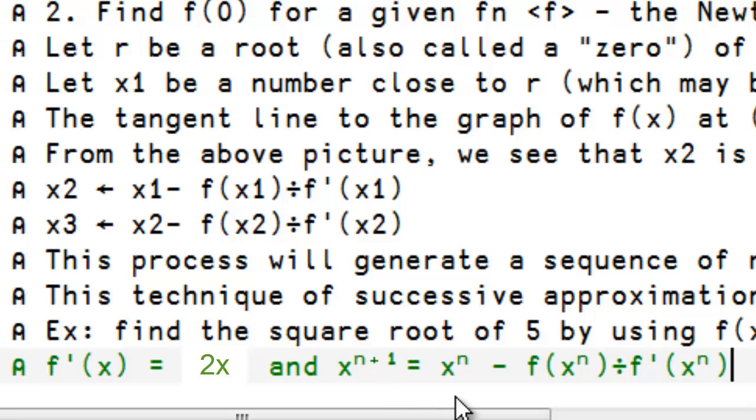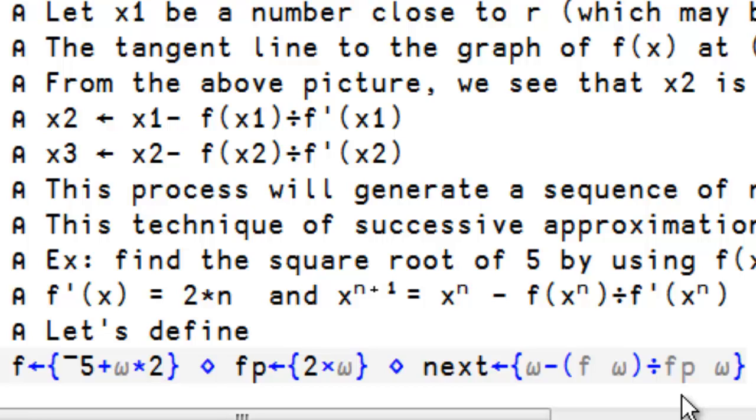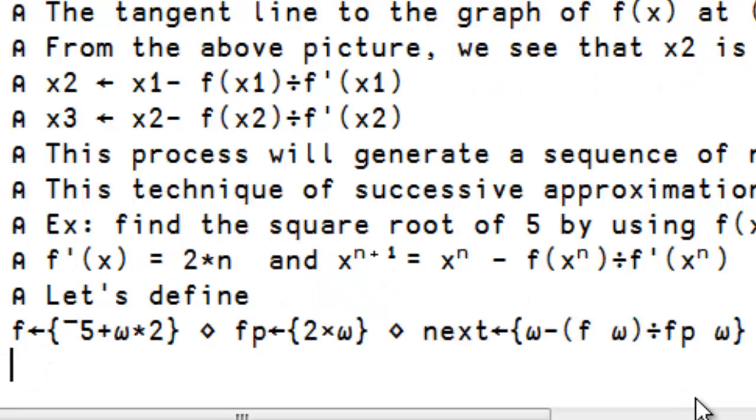the derivative of f is 2 times n. And the next point is going to be given by the current point minus f applied to that point, divided by the derivative of f at the same point. So, let's define f and f prime, which is the derivative. And the next point, which is going to be given by the value of our point minus f of that point, divided by the derivative at that point. So, let's start at 2.